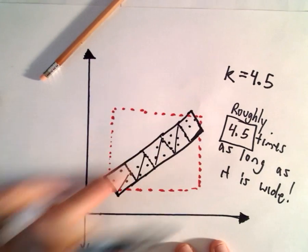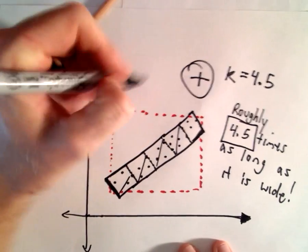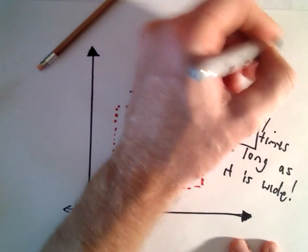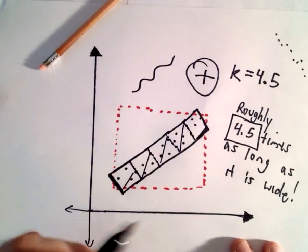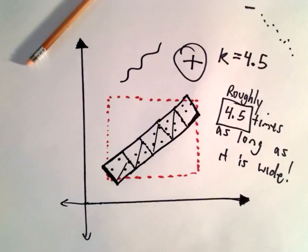Since our data is pointing upwards, we're going to use a positive sign. If the data was trending downwards in general, we would use a minus sign. That's all there is to it.